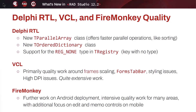For the Delphi RTL, besides addressing some quality tickets, we have added three small new features. There is a new ParallelArray class that allows you to do parallel operations like sorting on an array — this can make sorting two or three times faster. There is a new TOrderedDictionary, and there is support for the REG_NONE type in the registry, which is a key with no type — a feature of the Windows API now surfaced in the TRegistry class.